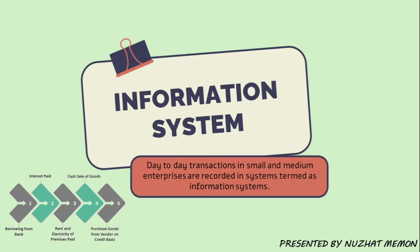What does information system mean? Day-to-day transactions in small and medium enterprises are recorded in systems termed as information systems. For example, you are recording daily transactions like paying rent or electricity bills, or recording miscellaneous expenses like paying for tea or snacks — all day-to-day transactions of small to medium enterprises recorded in your diary.